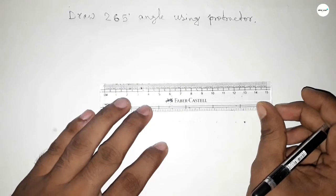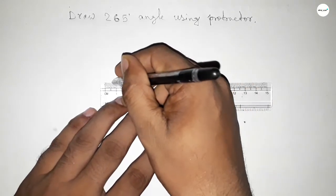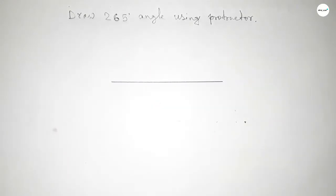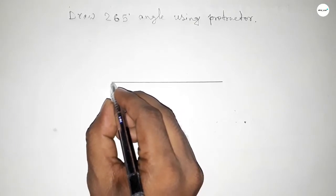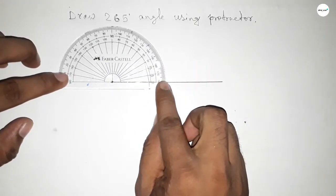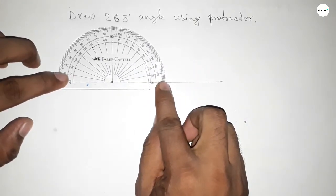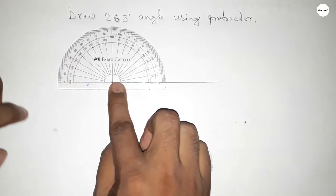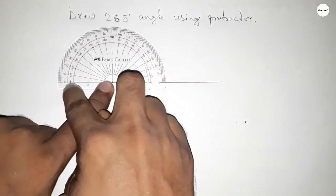Here a straight line of any length. So first drawing here a line, next pointing out here to draw 265-degree angle on this point. Now putting the protector on the line perfectly, then counting the angle. So this is...